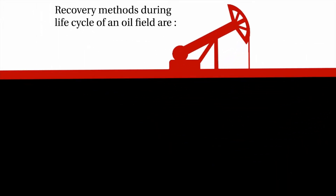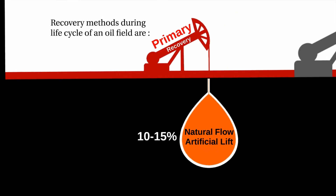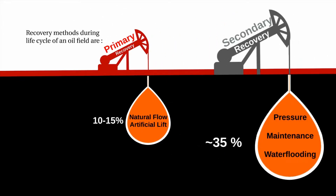To sum up, the life cycle of an oil field involves three main stages. The primary recovery consists in the field's natural drive or reservoir pressure. It enables us to unlock about 10 to 15% of the oil. The second stage involves reservoir pressure maintenance techniques, namely water injection, that enables about 35% oil recovery.